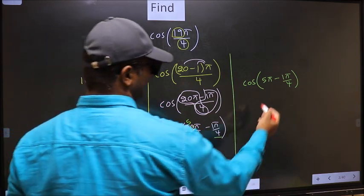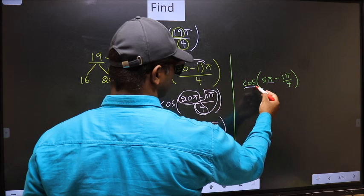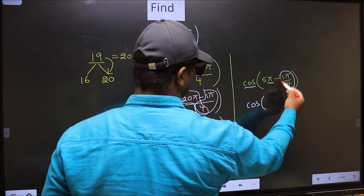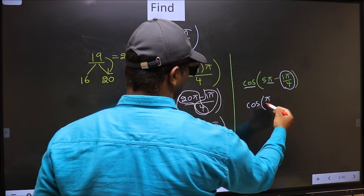Next, here we have π, so cos is not going to change, it will remain cos. And inside we get this angle, π/4.